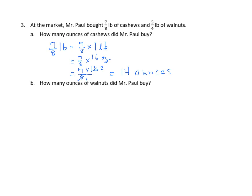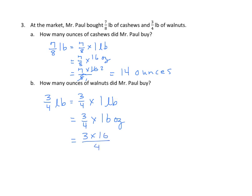The same procedure applies for walnuts, except we have three-fourths of a pound times sixteen ounces. We solve three times sixteen divided by four. Both sixteen and four are divisible by four, and the answer is twelve ounces. You can also use a tape diagram if you like — I'm showing the mathematical method here.